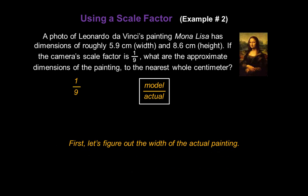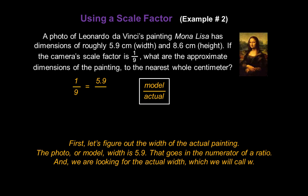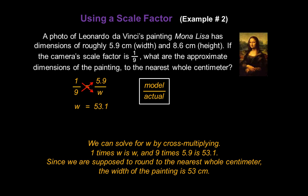First, let's find the width of the actual painting. The photo or model width is 5.9, so that goes in the numerator of our second ratio. We're looking for the actual width, so let's call that W in the denominator. We can solve for W by cross-multiplying: 1 times W is W, and 9 times 5.9 is 53.1. Rounding to the nearest whole centimeter, the width of the painting is 53 centimeters.